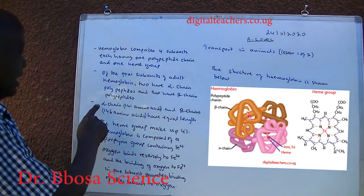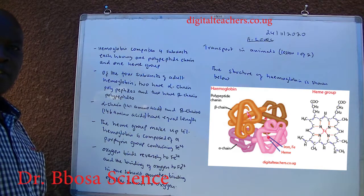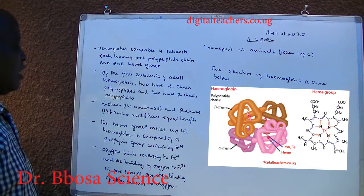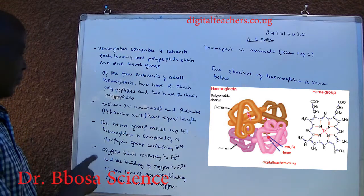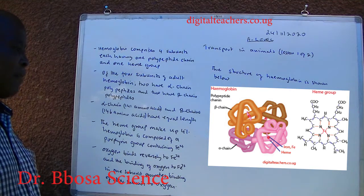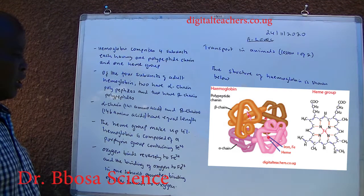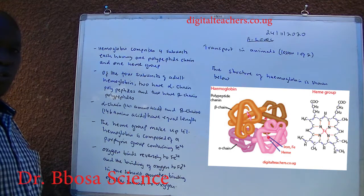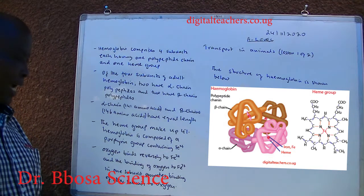The alpha chain has 141 amino acids and beta chain has 146 amino acids. The hemoglobin group makes up 4% of hemoglobin. It is comprised of a porphyrin group containing iron-2 ions.